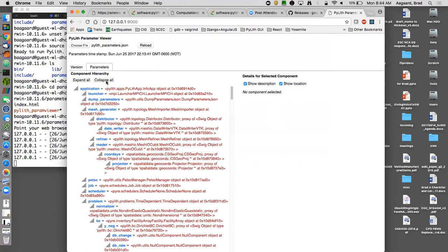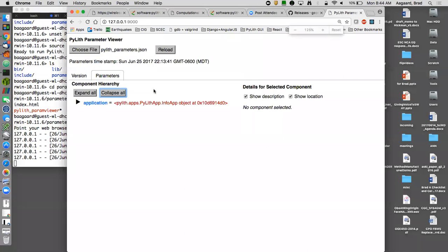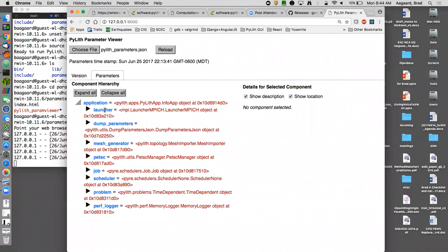On the left-hand side, let's first collapse everything. At the very top level, we have an application. Within application, we have information about a launcher, it's launching an MPI job in parallel, ability to dump parameters, a mesh generator, PETSc for our solvers, it can interface directly with job schedulers on clusters, information about a job scheduler problem. This is where our physics is.